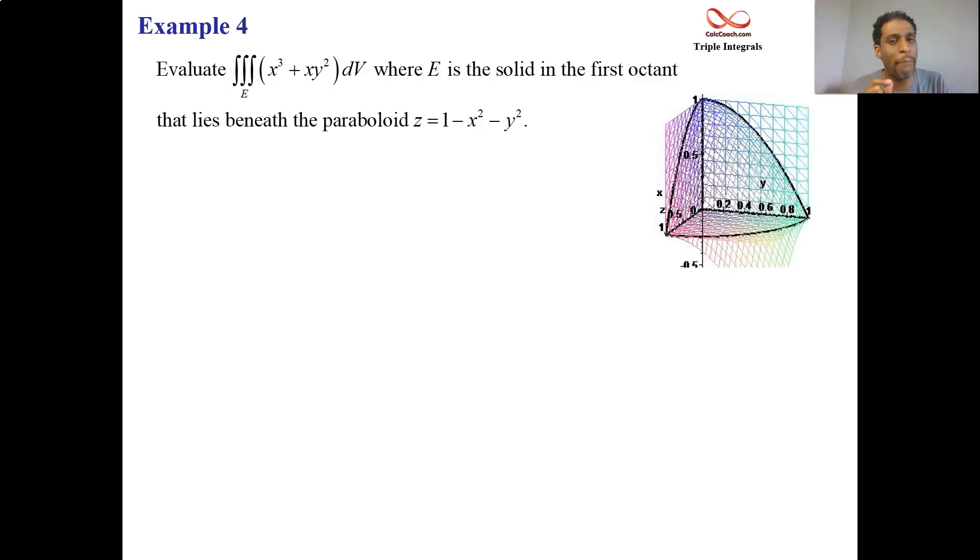So, this shape confined to the first octant has two of its parts being the coordinate planes, the xz and the yz plane. The bottom part is the xy plane, and then there's the curved part of the surface, which comes from the equation z equals 1 minus x squared minus y squared. So, that's our region E.